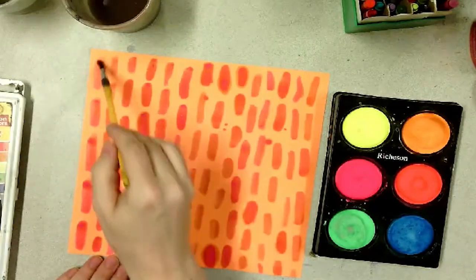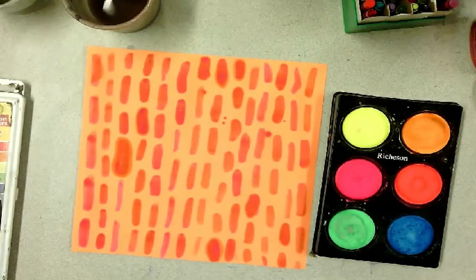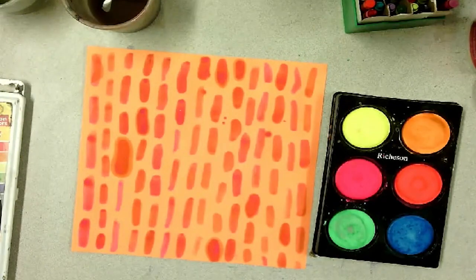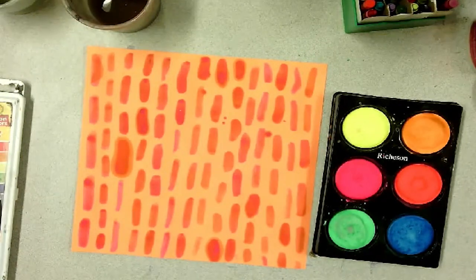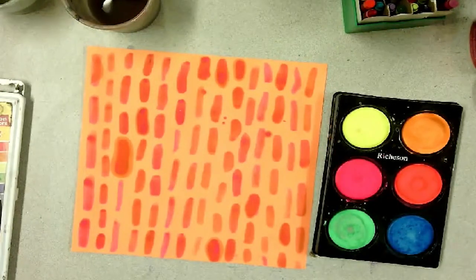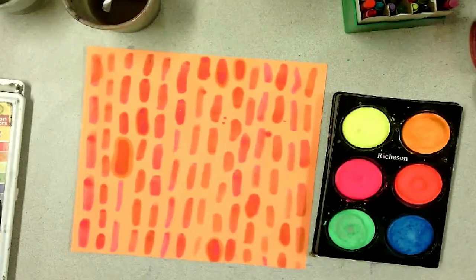Right now I'm using tempera cakes. These tempera cakes are neon fluorescent tempera cakes and that way the colors will glow in the dark. I'm filling the entire page with one pattern.